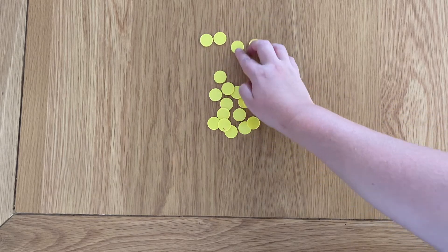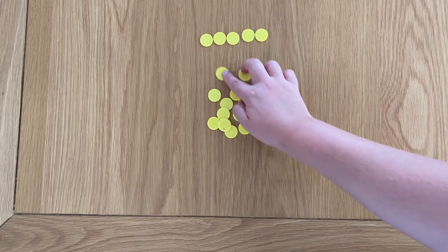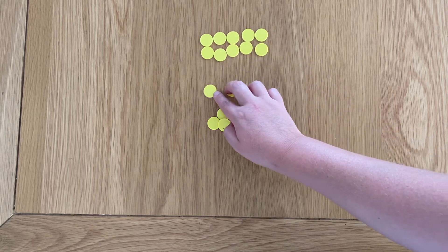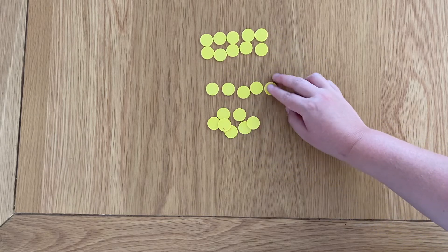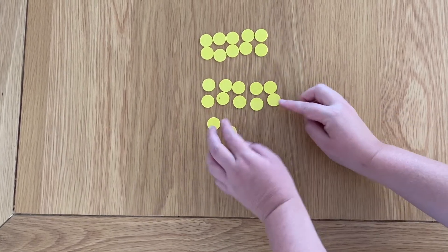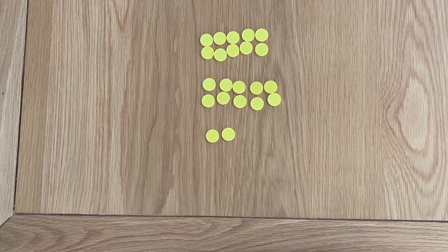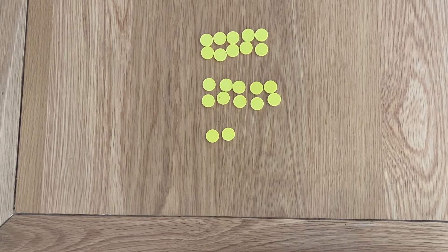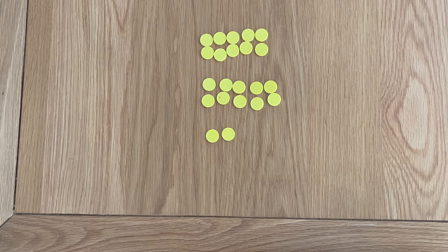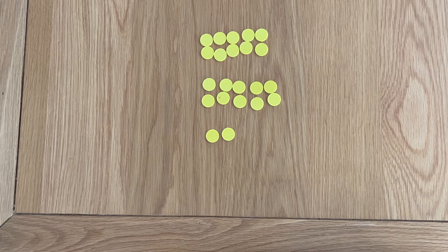So if they've read Emma's Big Counting they might start to organize the counters into 10 frames. So now we have 10 and we have 20 and then we have two left over and then there would be a discussion around how many counters are there all together, how do you know, how many tens, how many ones, that kind of thing.